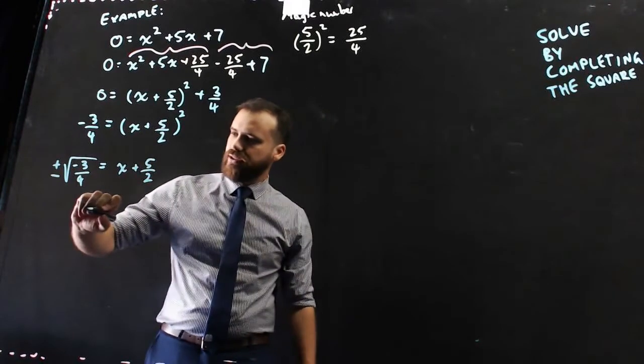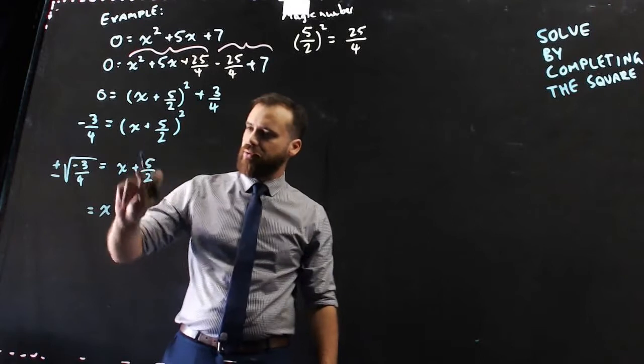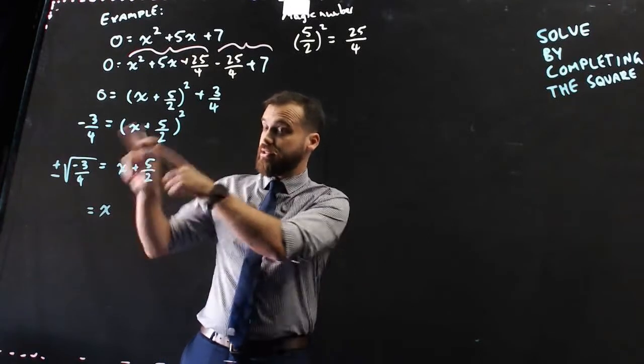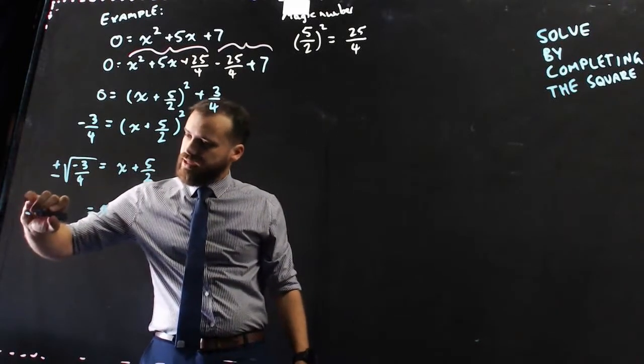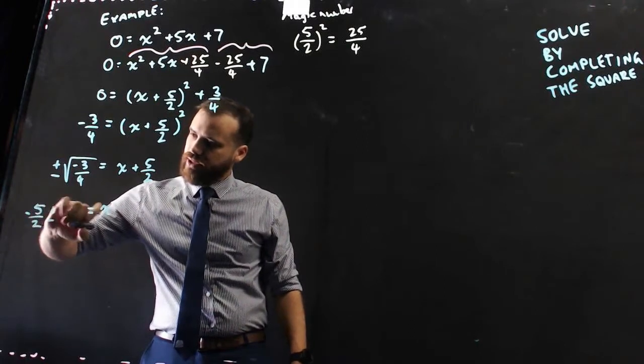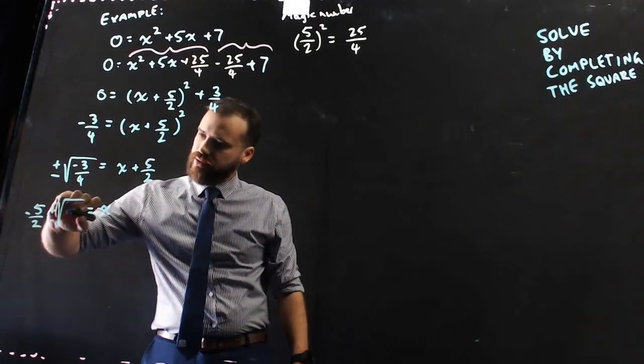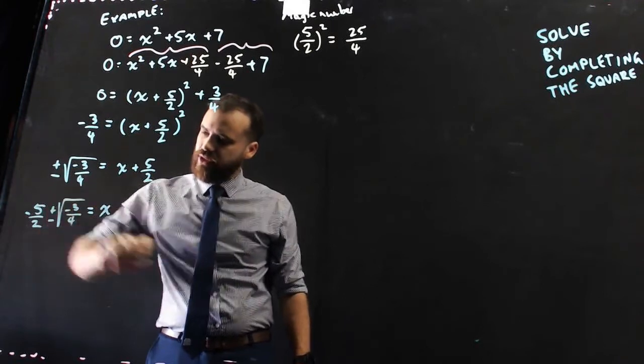And then, finally, x, if we move the plus 5 over 2 to the other side, it becomes negative 5 over 2 plus or minus the square root of negative 3 over 4.